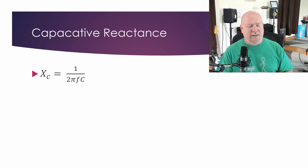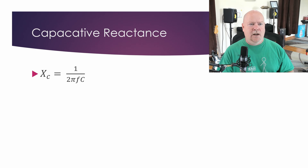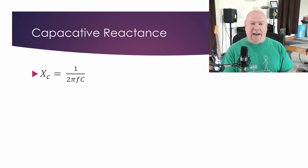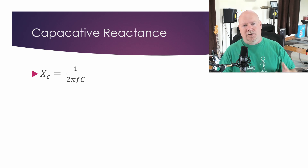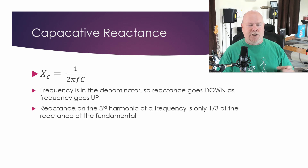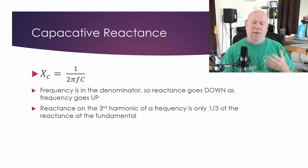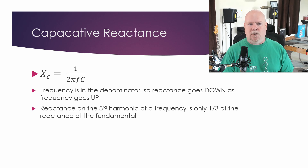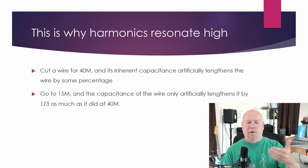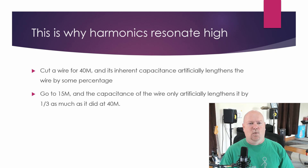Now, for a given capacitance at a given frequency, the formula on screen tells you what the reactance is going to be — how much resistance to the flow of energy that capacitance provides at a given frequency. The key thing to note is that the frequency component is in the denominator of the fraction, which means as the frequency number gets bigger, the capacitive reactance gets smaller. Think about that in terms of harmonics: if I've got some capacitive reactance at 7 megahertz and I go to 21 megahertz, my frequency is three times as high, so my capacitive reactance is only going to be one third of what it was at 7 megahertz.